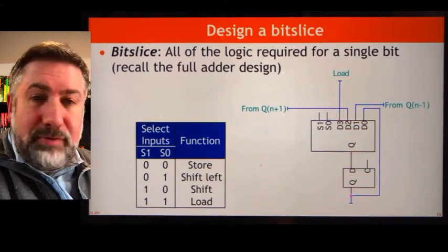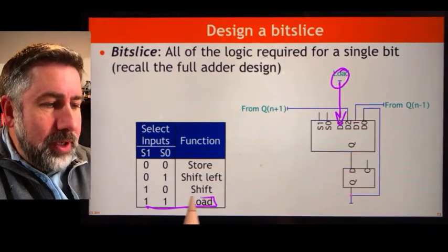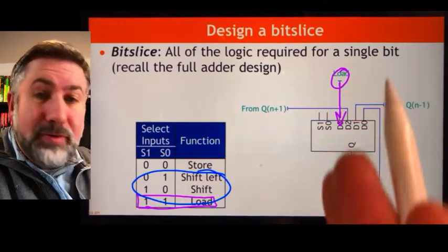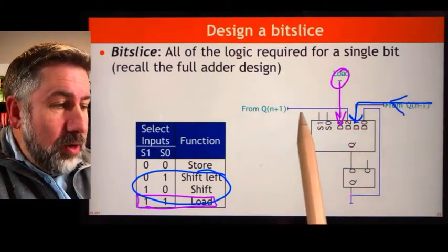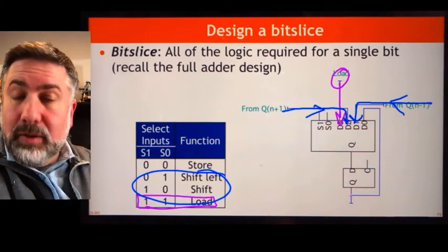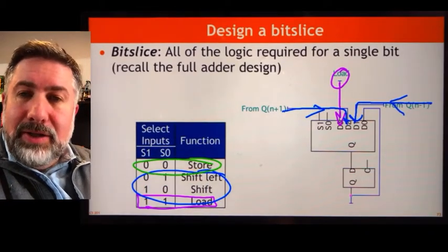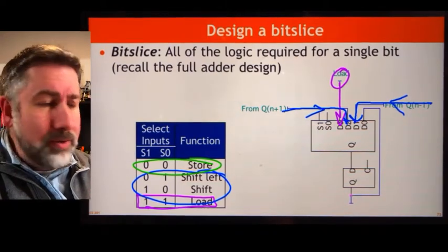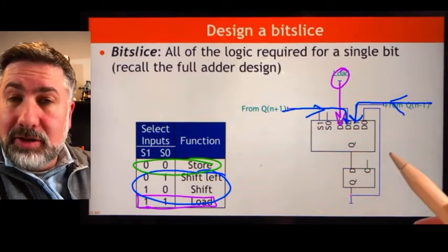The four functions: first, we can load information from the outside world when control logic is set to three. If set to one or two, we shift — bringing information from the right if shifting left, or from the left if shifting right. The last function is to store the current value. People sometimes get confused because the flip-flop has storage built in already, but the storage process for a D flip-flop relies on the clock, and we want the clock synchronized across all devices.